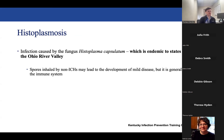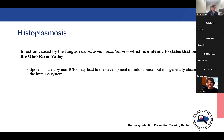One infection I wanted to highlight is histoplasmosis, caused by a fungus endemic to states bordering the Ohio River Valley — so there's a higher rate of this infection in our area. When spores are inhaled by a non-immunocompromised host, they can develop mild disease that the immune system generally clears. The same is not seen in immunocompromised hosts, making it interesting that we have endemic opportunistic infections essentially right in our backyard.